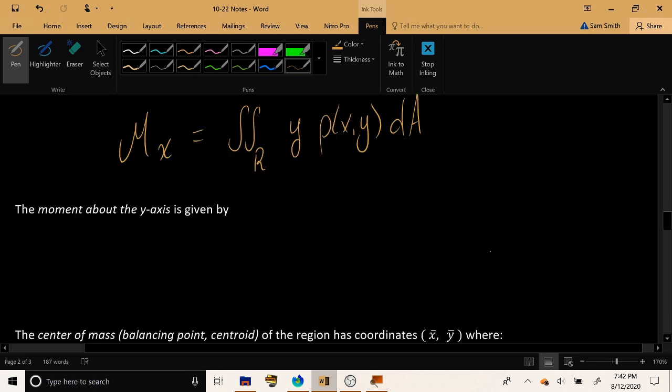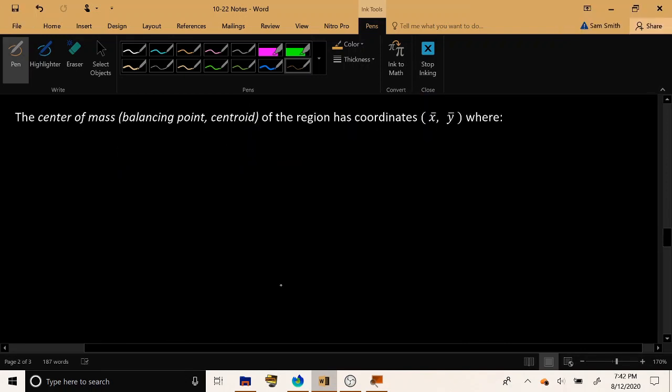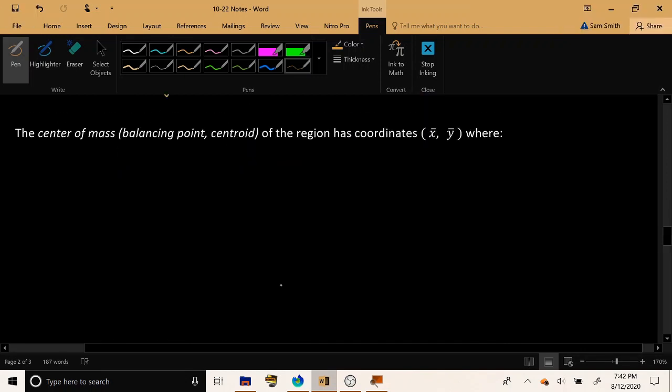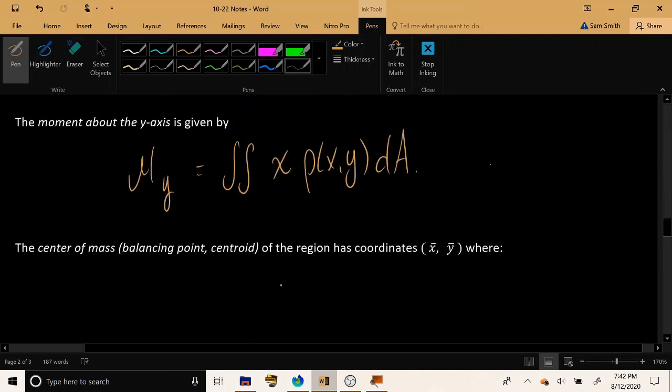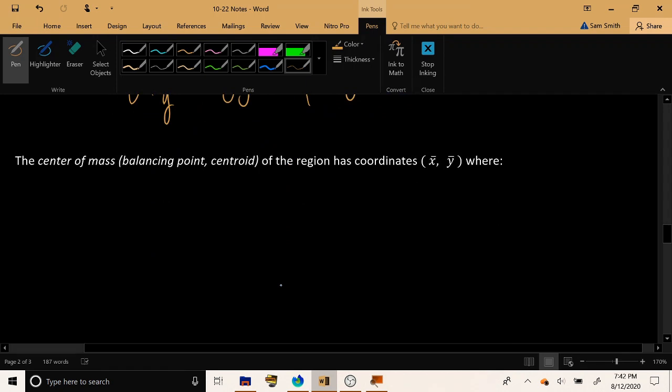And the moment about the y-axis, which is called m_y, is given by the double integral of x·ρ(x,y). So now that we have established the formulas for these two quantities, m_x and m_y, let's use them to calculate the center of mass of an object.